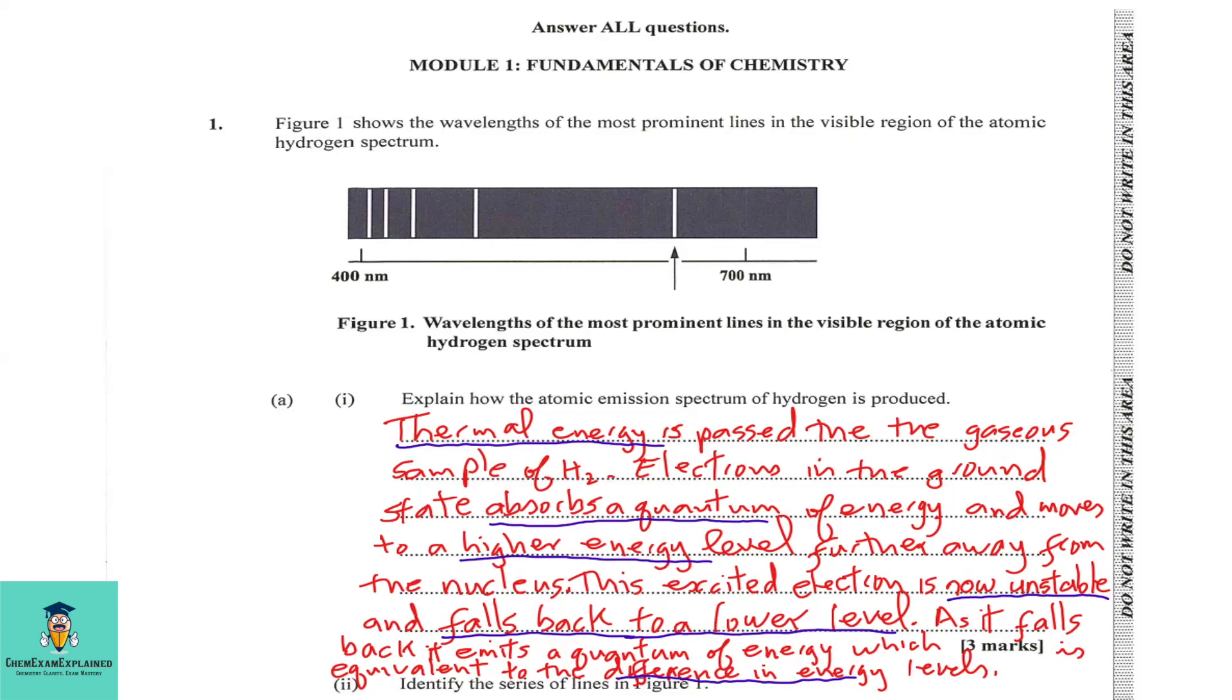This excited electron is now unstable and falls back to a lower level. As it falls back, it emits a quantum of energy which is equivalent to the difference in energy levels.